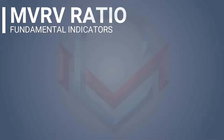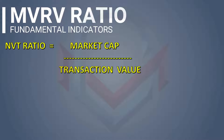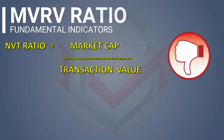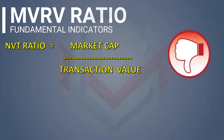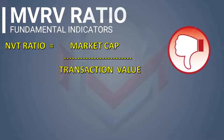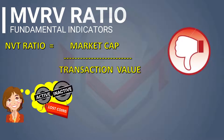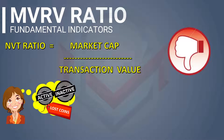In the last episode, we covered the transaction volume and the MVRV Ratio introduction. In this episode, we will cover the disadvantage of this ratio — the fact that market capital includes active or inactive coins, not only lost coins.